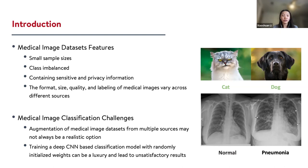Let's move on to the data description. Here we have two datasets. One is the target dataset, which is a small and heavily imbalanced chest X-ray image dataset used for binary classification. The other is the source dataset, which mimics the situation that there exists a bigger dataset collected by another hospital or institution from which we can borrow some information.